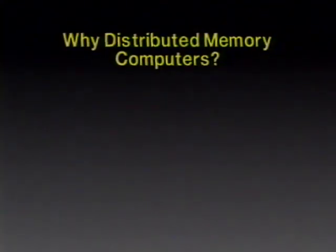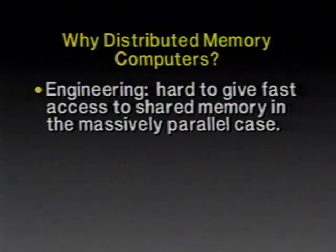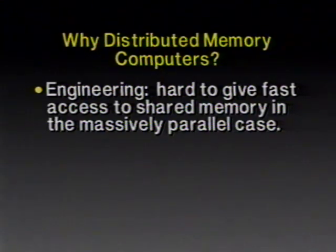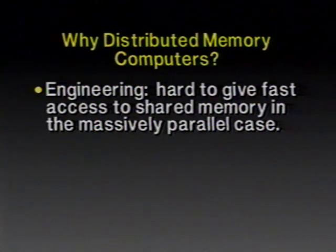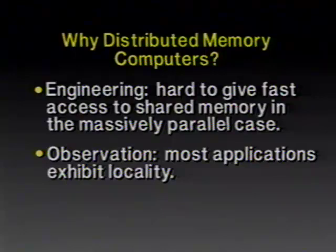Now let's go back to why distributed memory computers. Why not keep the memory together and just have lots of processors all accessing the same memory? There's an engineering reason: it's very hard to build a switch that gives every processor equal access to all parts of the memory, and in a shared memory machine that switch is on the path between every processor and every memory on every memory reference — so it's got to be very fast, meaning an expensive solution. The empirical observation is that most applications exhibit locality that you can exploit.